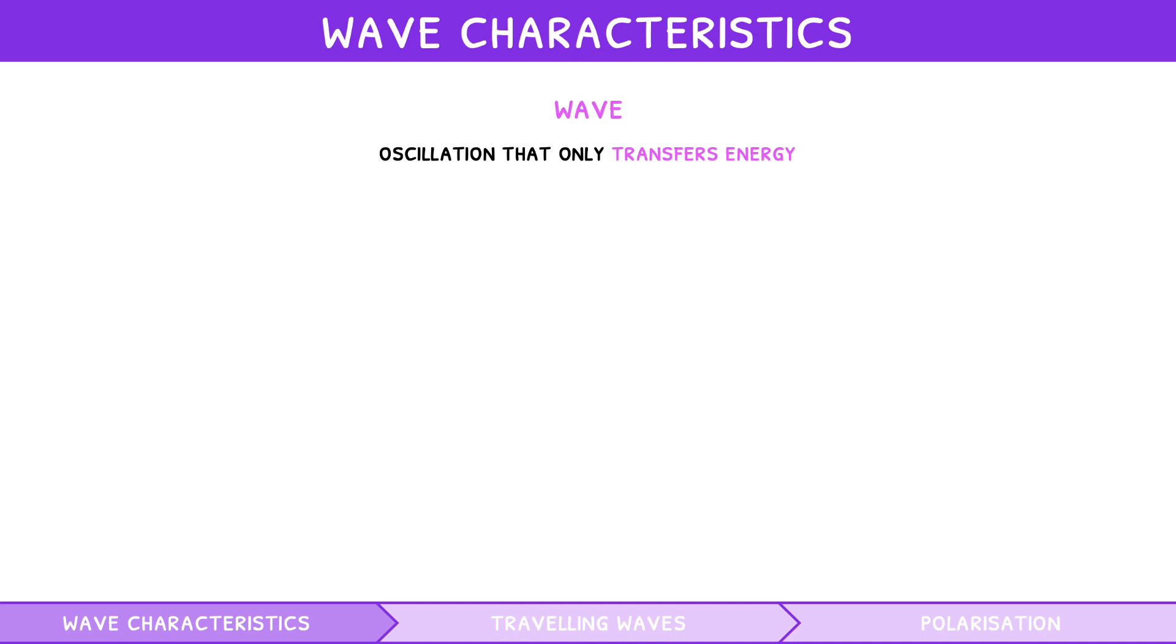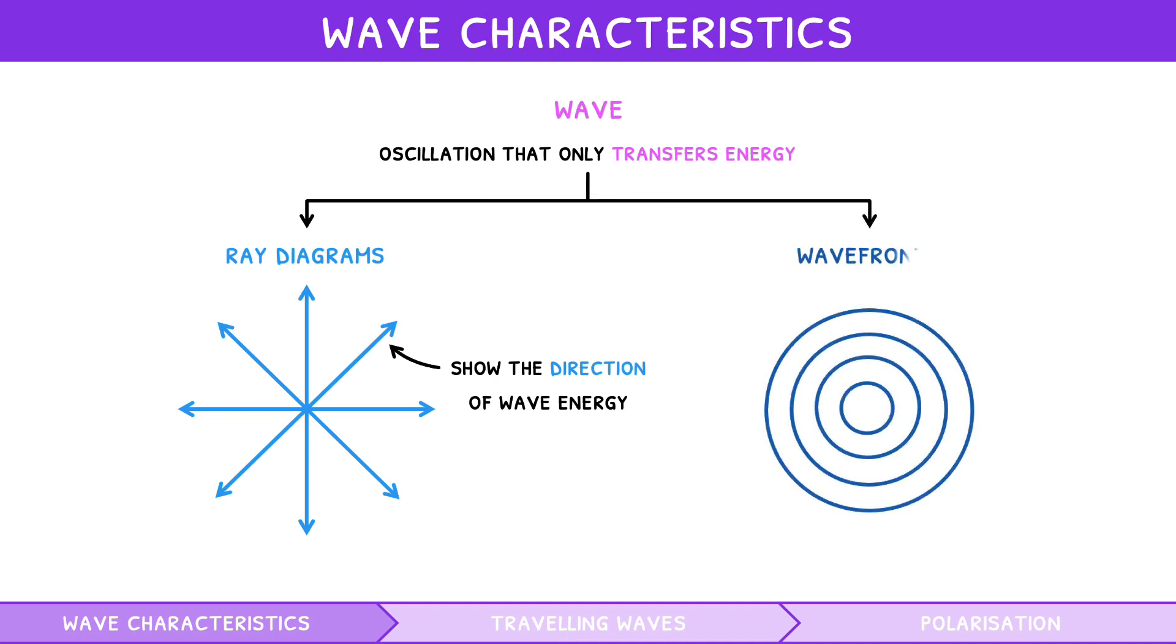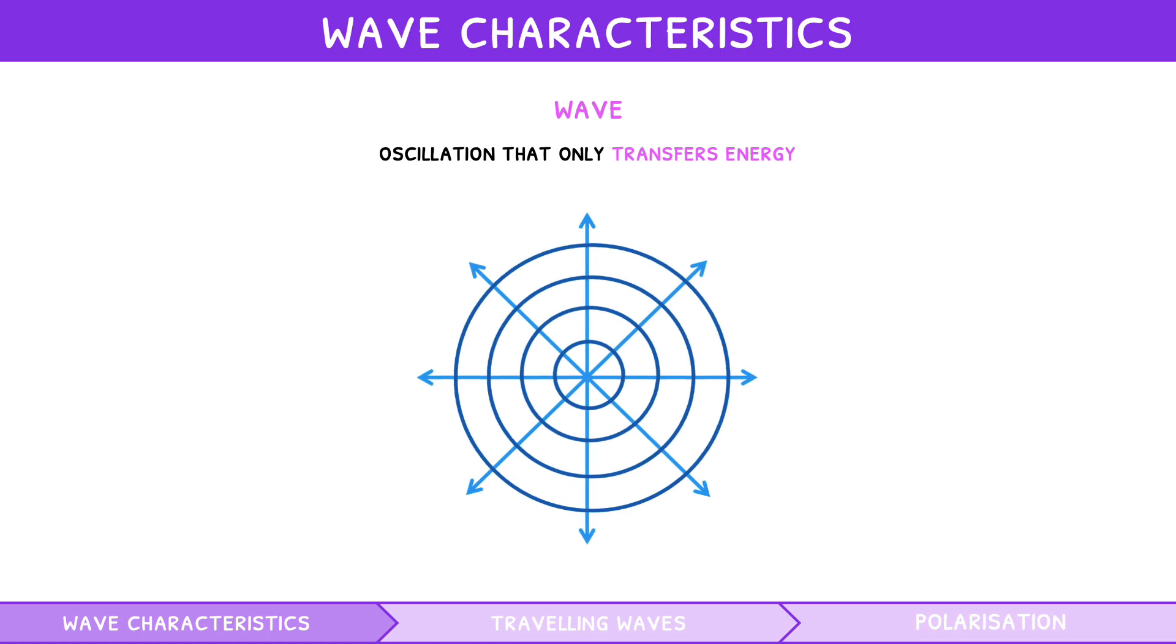You can visualise waves in two main ways. Ray diagrams, a diagram where arrows show the direction in which the wave energy travels, and wave fronts, a diagram where circles show the oscillation points of waves moving together, i.e. crests or troughs. Often, these are combined. However, note that rays and wave fronts are always at right angles to one another.